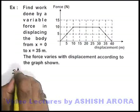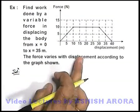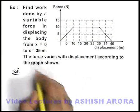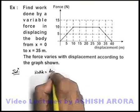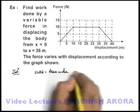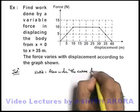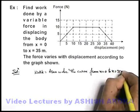As we already studied, if we are given with an F-x curve, the work done by a force can easily be calculated by finding the area under the curve. Here we can directly write work is equal to area under the curve from x equal to zero to x equal to thirty-five meter.